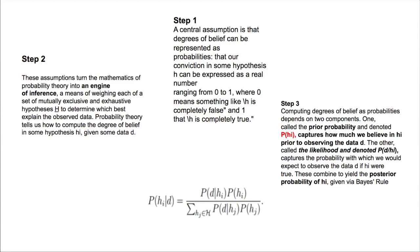So we briefly touched on the mathematics or the formula that Bayes has laid down. I think we need to review this in a little more detail in a stepwise fashion. In the first slide, you see that the central assumption is that degrees of belief can be represented as probabilities — that our conviction in some hypothesis can be expressed as a real number ranging from 0 to 1, where 0 means the hypothesis is completely false and 1 means it is completely true.